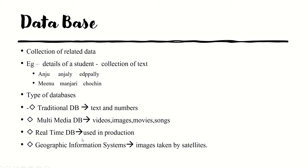The third category is the real-time database — data which is available in real time, mainly used in different production environments. The last example is the geographic information system, where the aim is to store images taken by satellite. Basically, all these databases are a collection of interrelated data, but based on the type of data being stored, we divide and call them using different names.